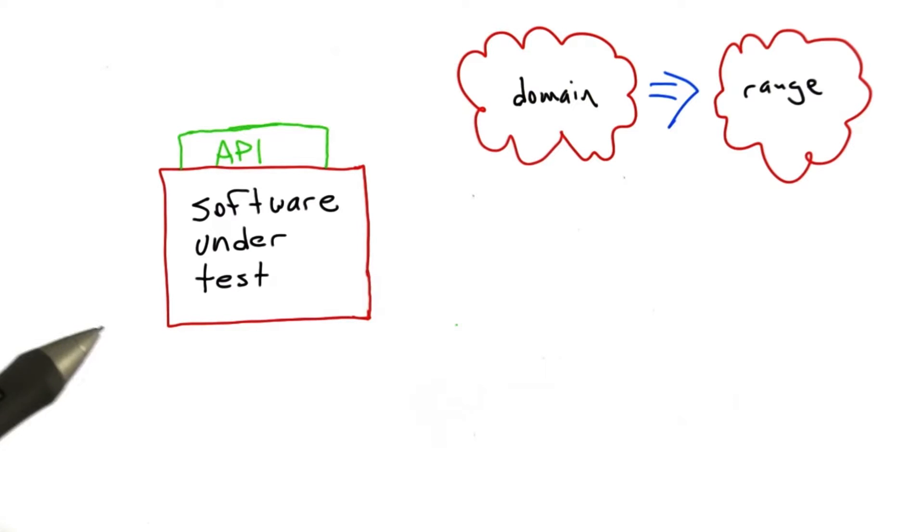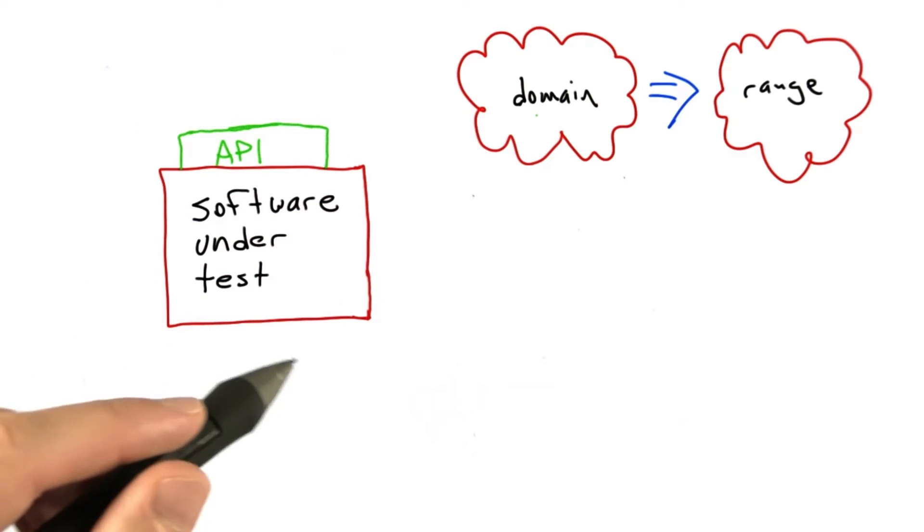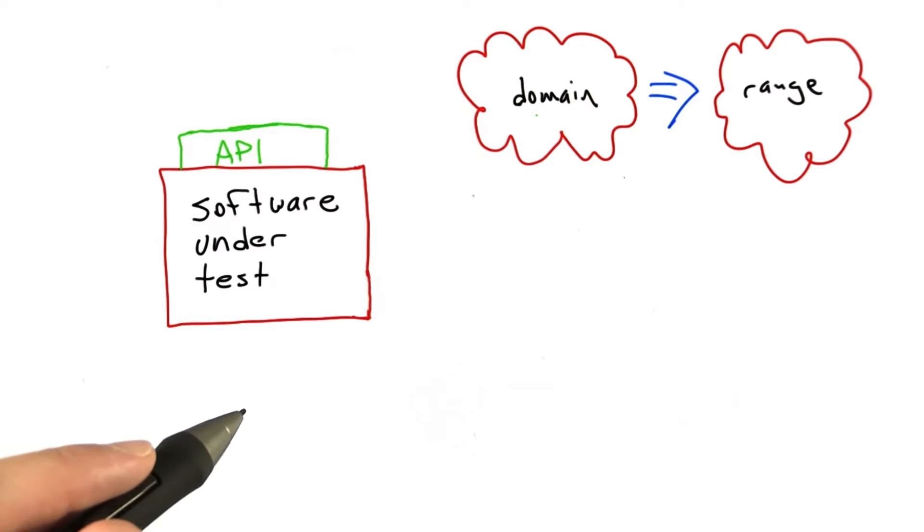Now in contrast with software libraries and software components where the domain is clearly defined and might be a subset of all the values that you can construct using the programming language, it's often the case that higher level software artifacts don't have the luxury of limiting their domains.